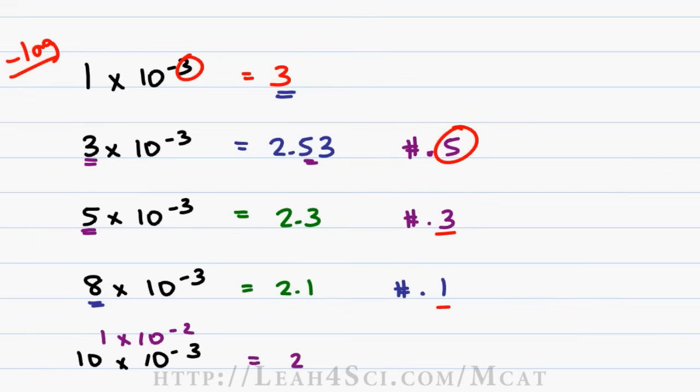In other words, for the quicker version, if you're given 5 times 10 to the minus 3, we recognize the number is near 3 but because it's a 5 and not a 1, we have to go down and the answer will be 2 point something, in this case 2.3.